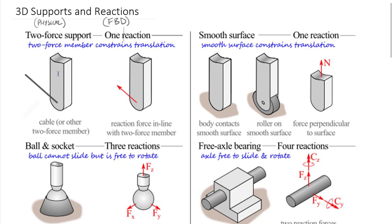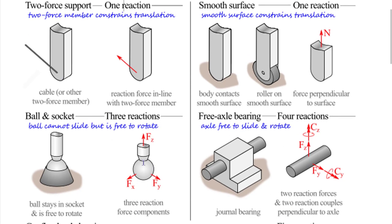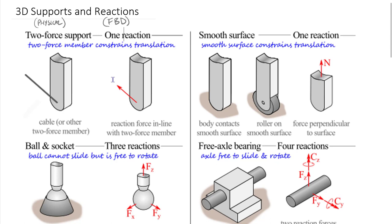In the upper left, we have anything that's a two-force support. I drew a cable here, but you could also have a weightless pinned link. In three dimensions, instead of two-dimensional pins, we actually have ball and sockets. If you have a massless member with a ball and socket at both ends, that becomes a two-force member carrying one single internal force, which is either tension or compression. I've drawn it pulling, so that would be tension. Tension pulls, compression pushes.